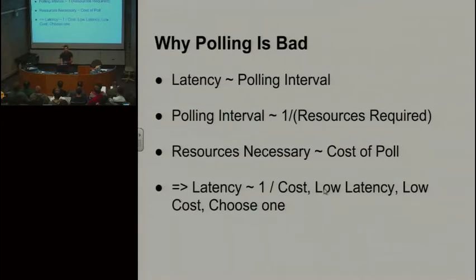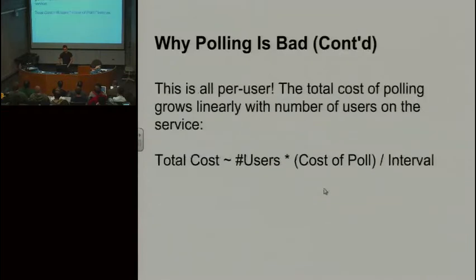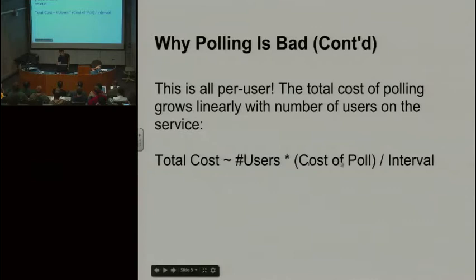Even given that general model, there are still reasons why pulling is bad. Number one, latency is related to pulling intervals — the longer your pulling interval, the more latency you have. But the pulling interval is also inversely proportional to resources required: the more you pull, the more resources you need. Resources are proportional to cost. So you can either pick low latency or low cost — you're kind of stuck.